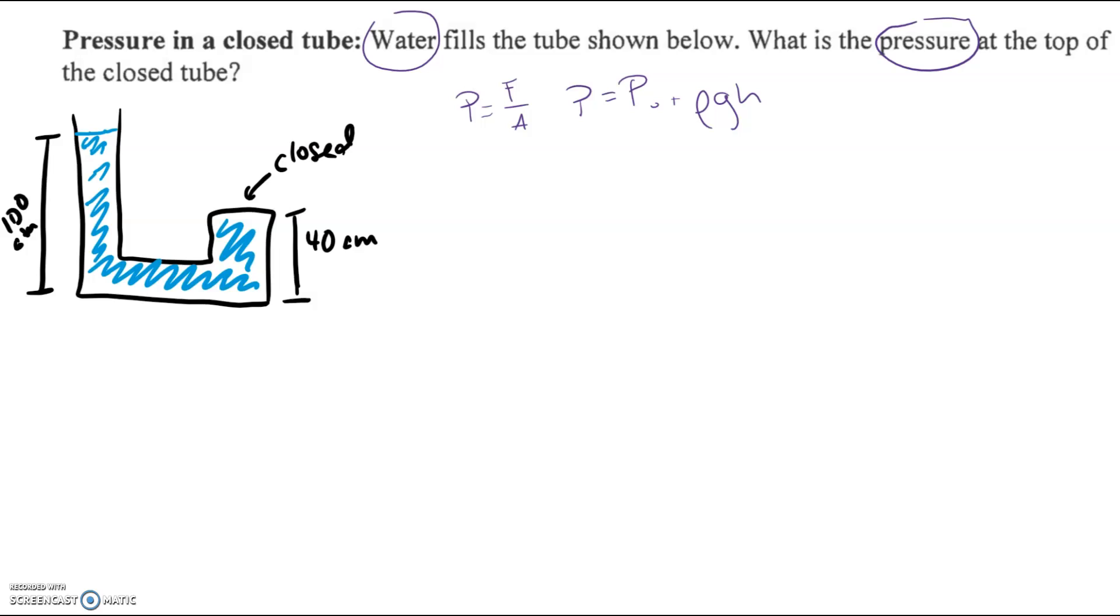So looking at this, we don't know anything about what's going on here with forces. So that's not going to be useful for us. So we want to use the hydrostatic pressure formula. So we're assuming that this tube is done filling water, that the fluid is stationary.